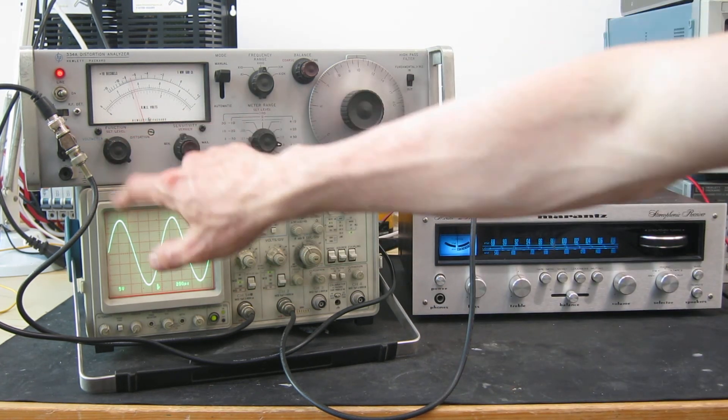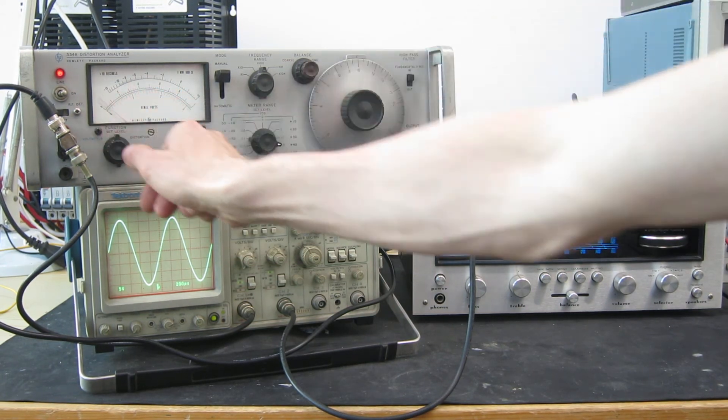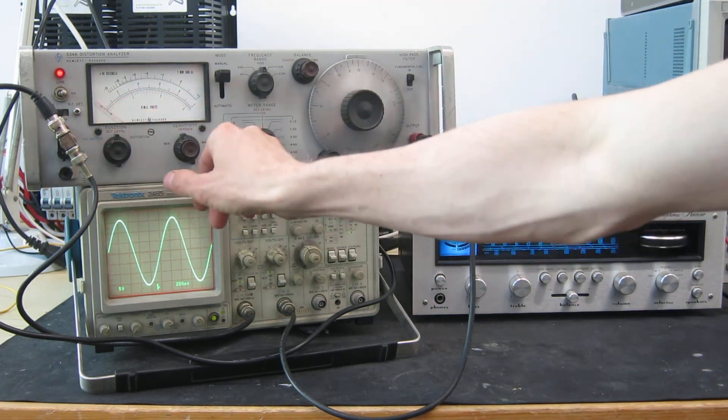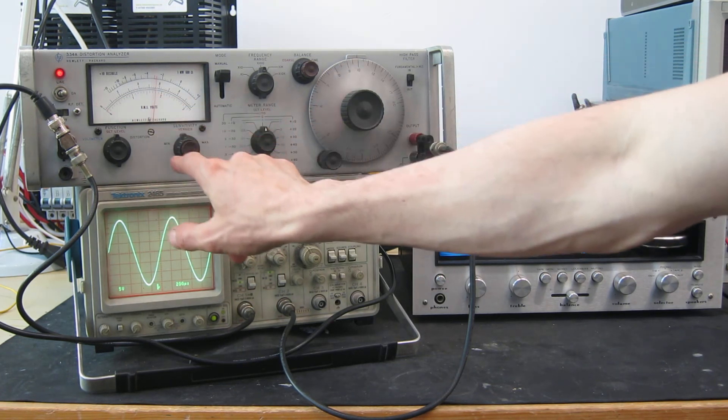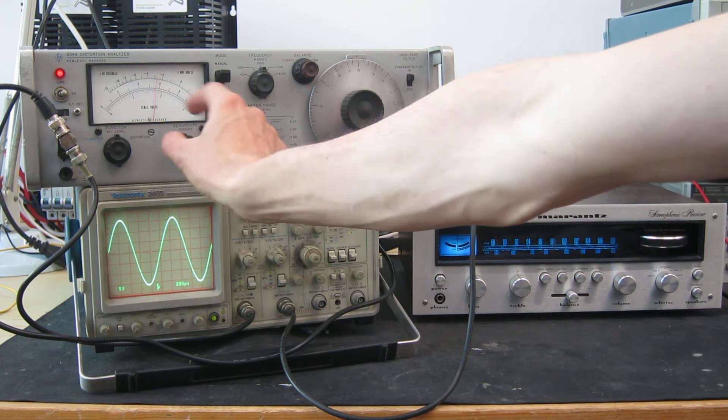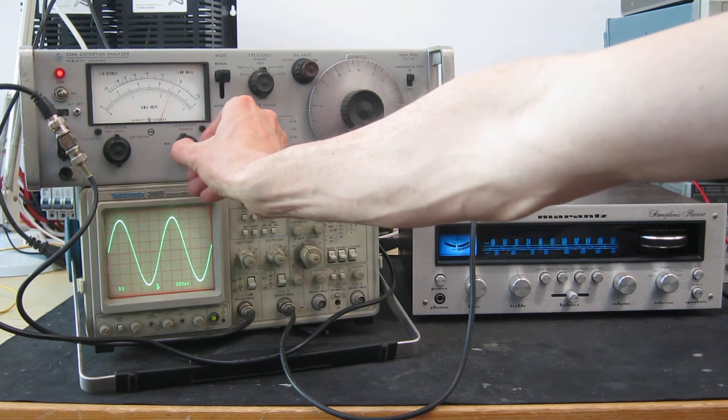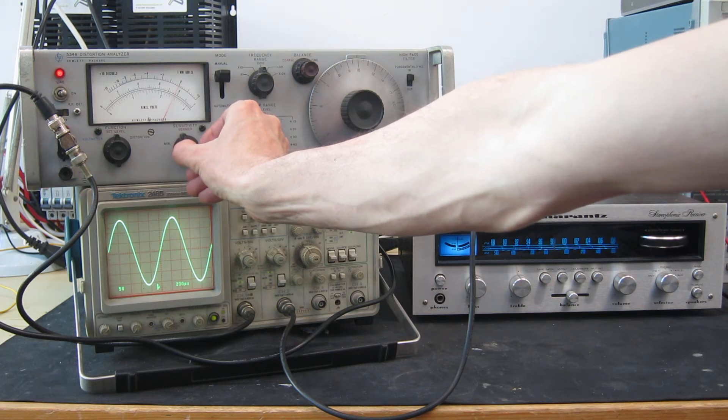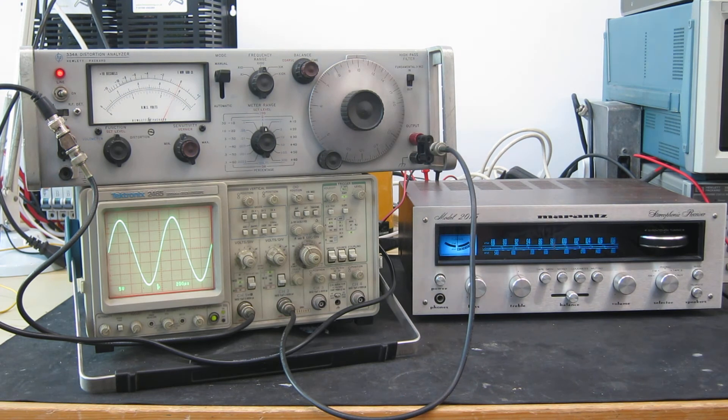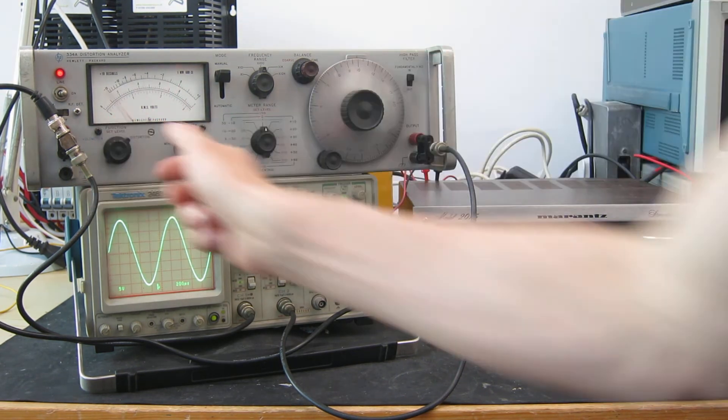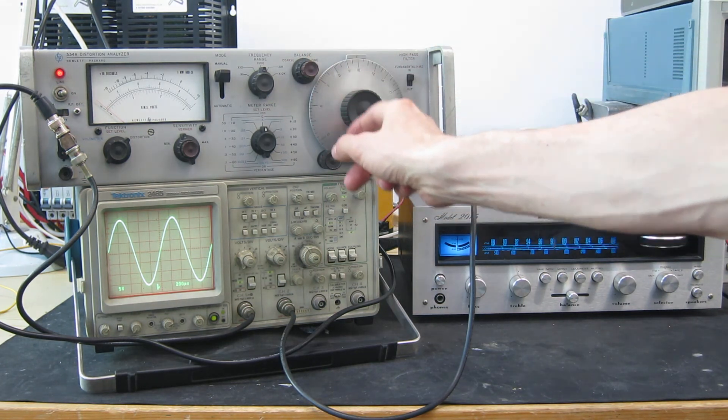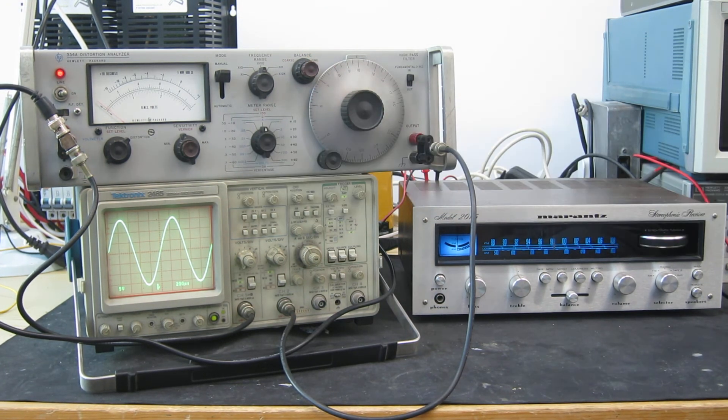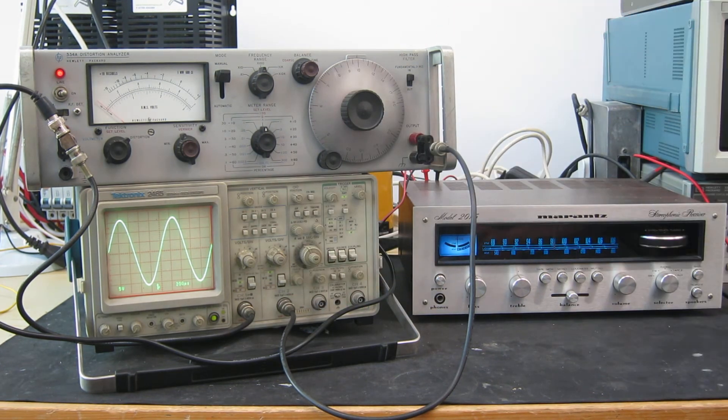So this has been on voltmeter mode. First we set the reference level. We put it on set level. We have to adjust the vernier here for a level of 0 dB on the meter. That's our reference and then we keep everything constant from now on. That's set to 0 dB. Now to measure the distortion we click to distortion mode and we use the balance control here and the frequency adjustment to null out the 1kHz signal leaving only the distortion hopefully which we can then measure.